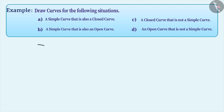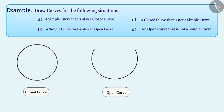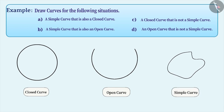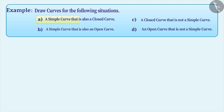If the ends of a curve are joined, then it is a closed curve; otherwise, it is an open curve. Similarly, if a curve does not cut itself, then it is a simple curve. Based on this understanding, we can draw a simple curve which is also a closed curve in this way.